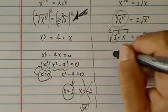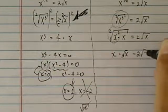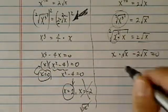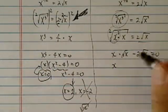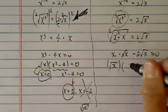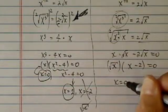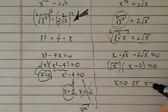So this one gets to be x times radical x minus 2 radical x equal to 0, and move this one over. Then I have radical x pulled out. Then I have x minus 2 equal to 0. So x equal to 0 or x equal to 2.